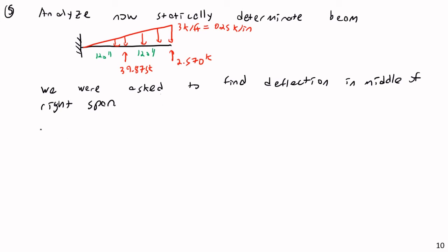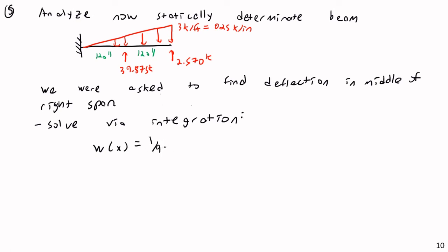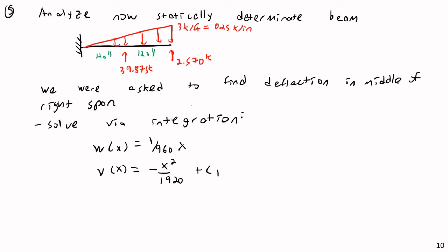I'll solve for this deflection by integration. W(x) = x/960, unchanged. V(x) = −x²/1920 + C₁. The equations will be similar to before but with different boundary conditions. The boundary condition here is that V(240) = −2.570 kips, because just before the roller reaction at C the shear must equal −2.570 so it can jump back to zero.